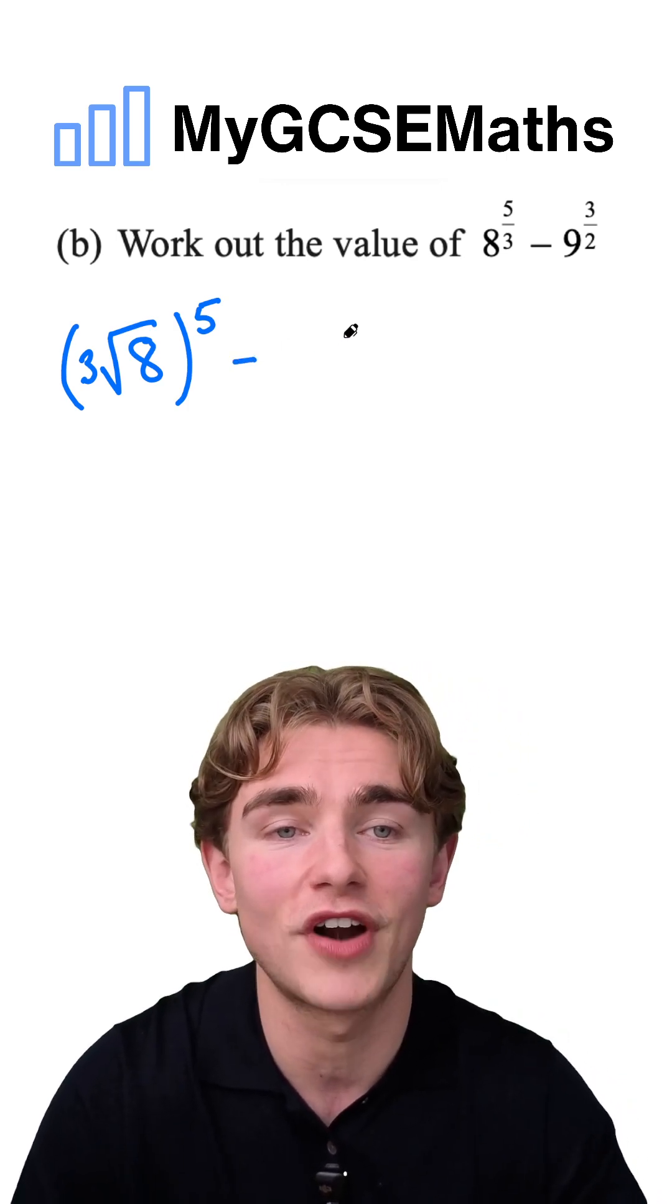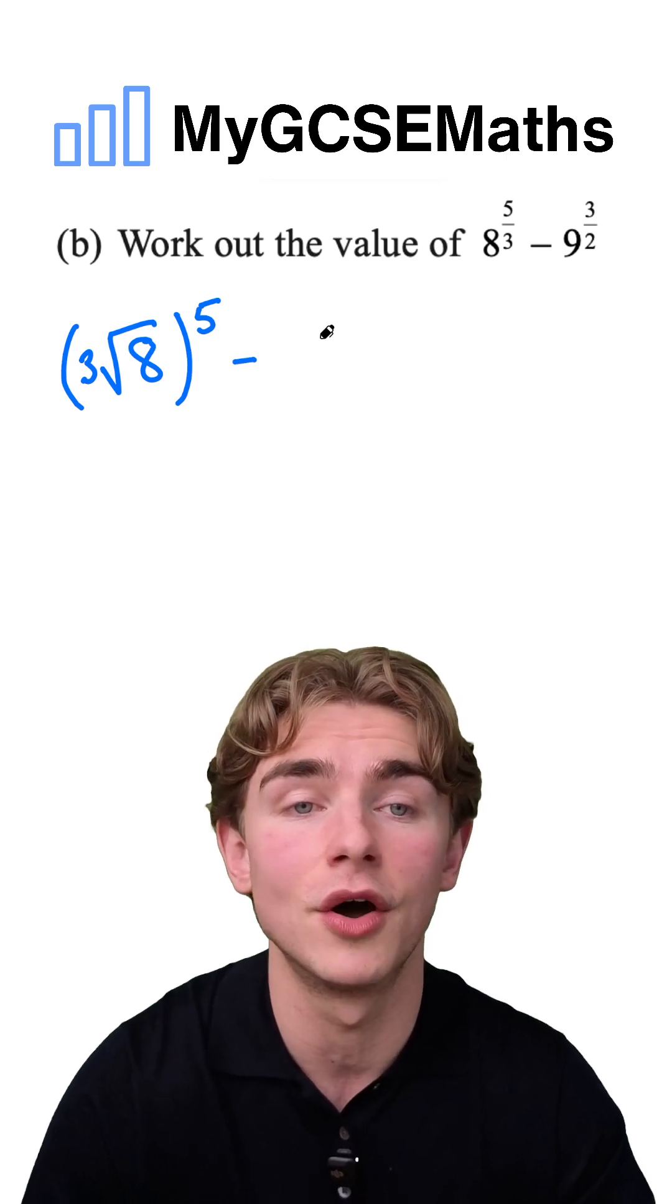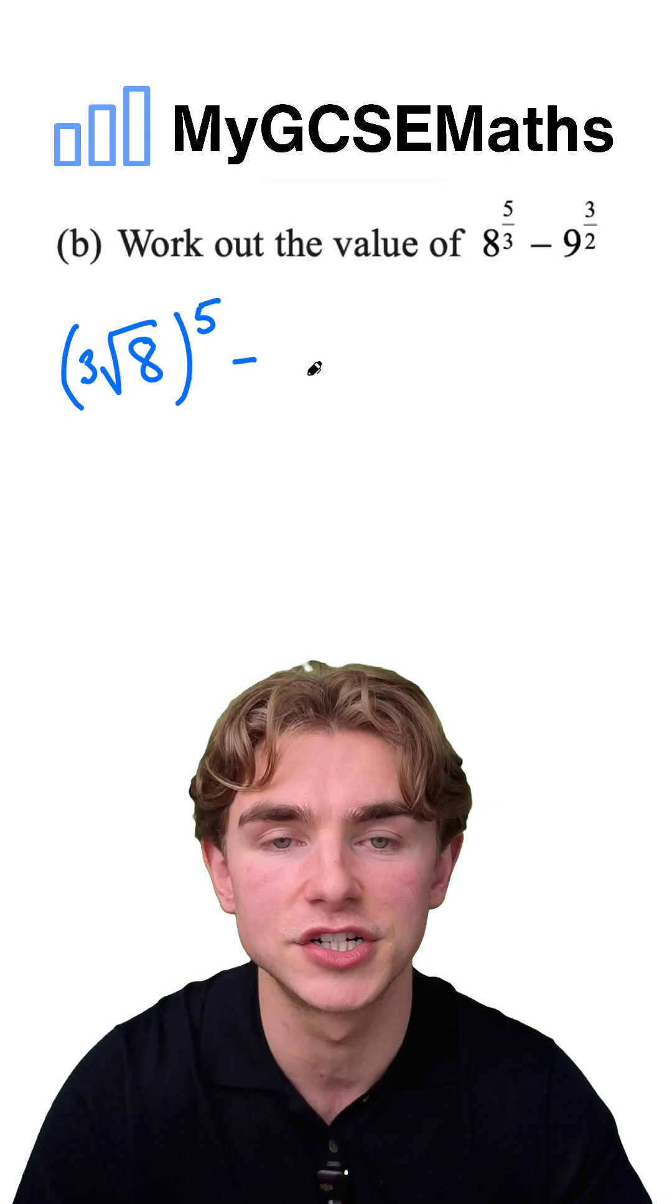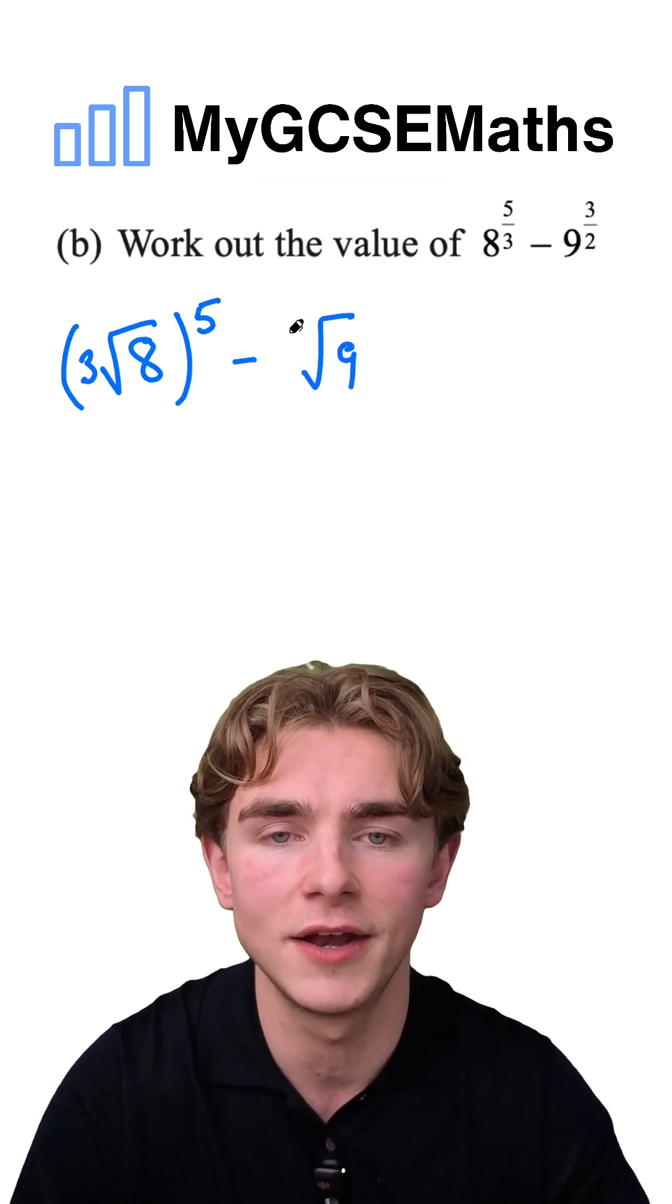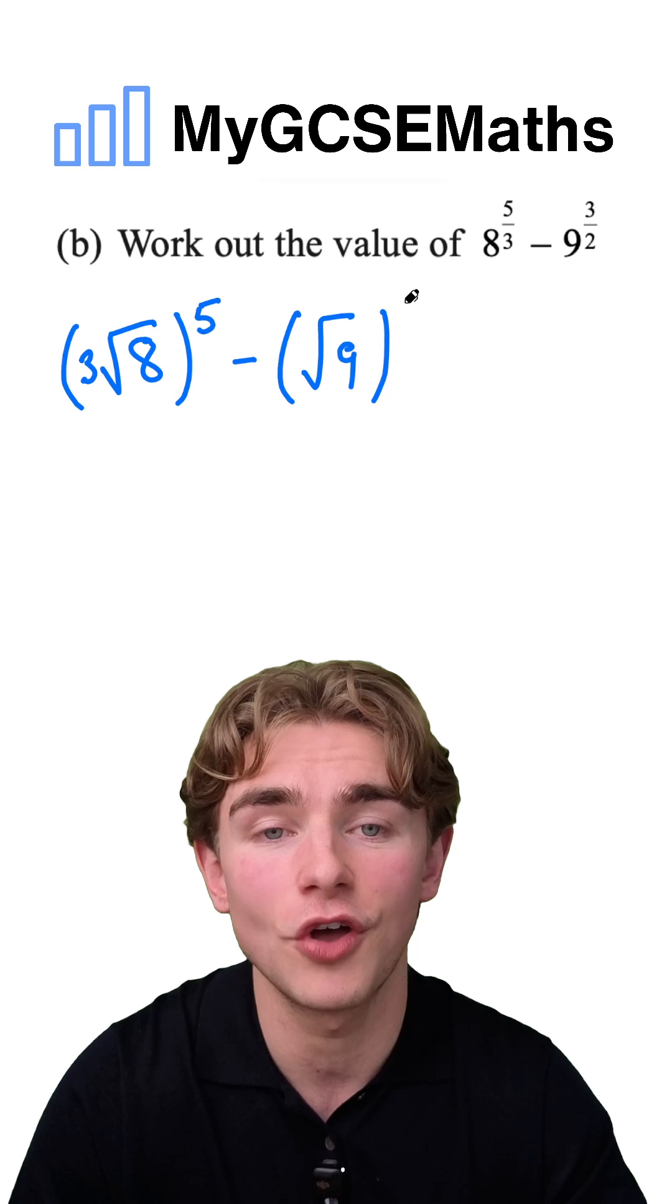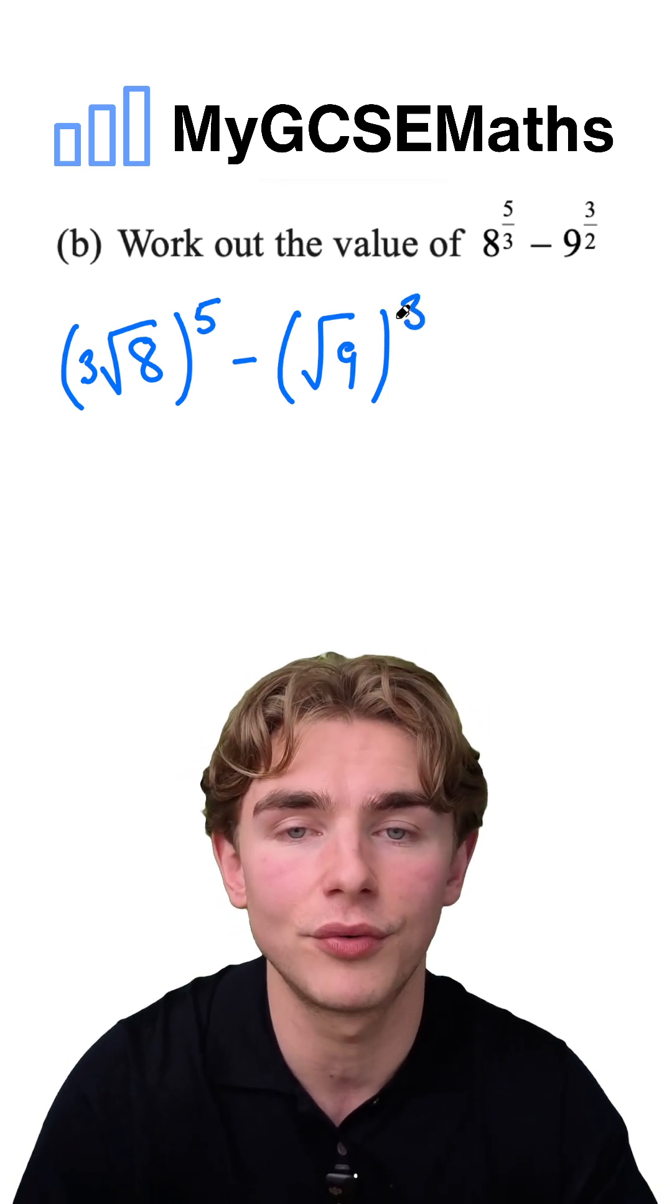Now what about the 9? We're going to subtract 9 to the power of 3 over 2. This time there's a 2 on the bottom of the fraction so we're going to do the square root of 9, and because there's a 3 on the top of the fraction, we're going to raise this to the power of 3.